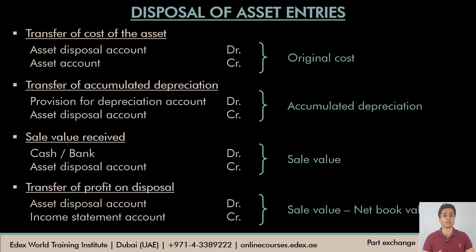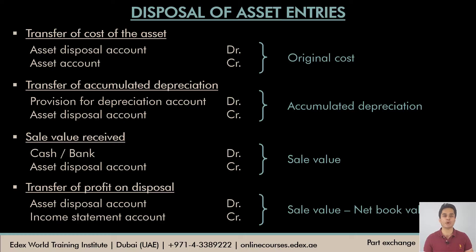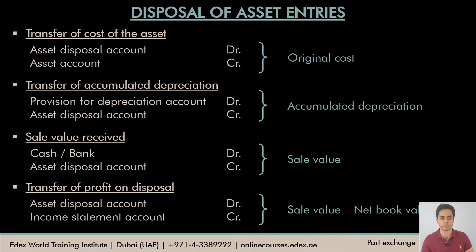The same set of entries are passed for the part exchange of assets. In a part exchange, rather than selling the old asset individually and then buying a new one, you buy a new non-current asset and give away the old non-current asset in exchange. The difference in value is paid in cash or by cheque, because in most cases the new asset is worth more than the old one.